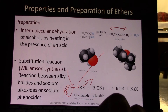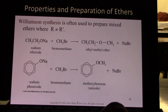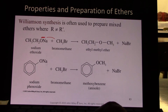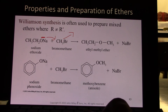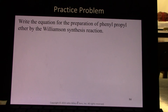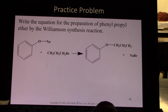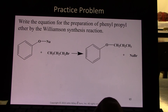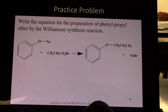In Williamson synthesis, use a super strong base to deprotonate an alcohol so you have that O-minus, which can attack and kick off your halide, forming your ether and sodium bromide. For example, write the equation for the preparation of phenyl propyl ether. You use the phenoxide — phenol with the hydrogen removed. The benzene ring is not a leaving group, so you can't attack it in an SN2 mechanism. Instead, you get the O-minus which can attack a normal carbon and kick off the bromine group, forming your ether and sodium bromide.